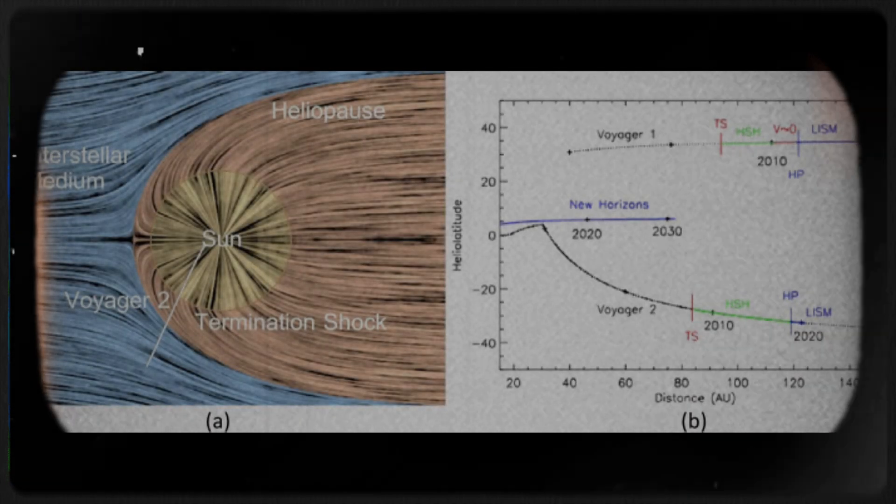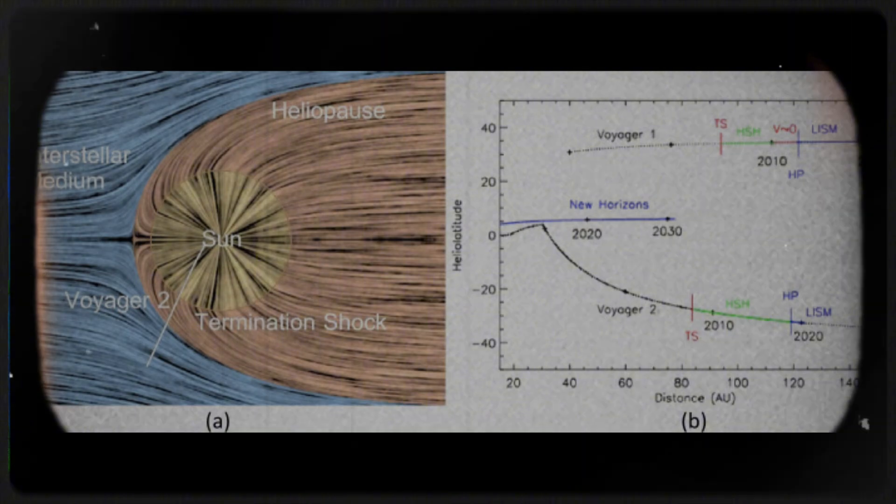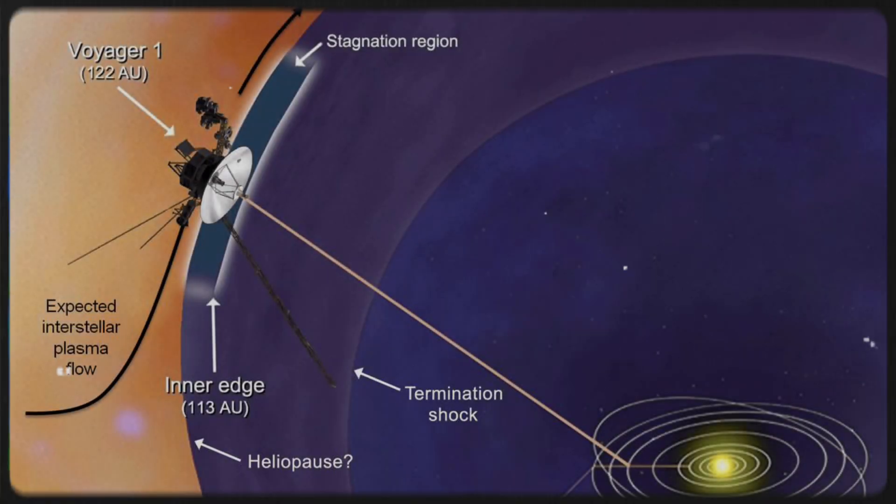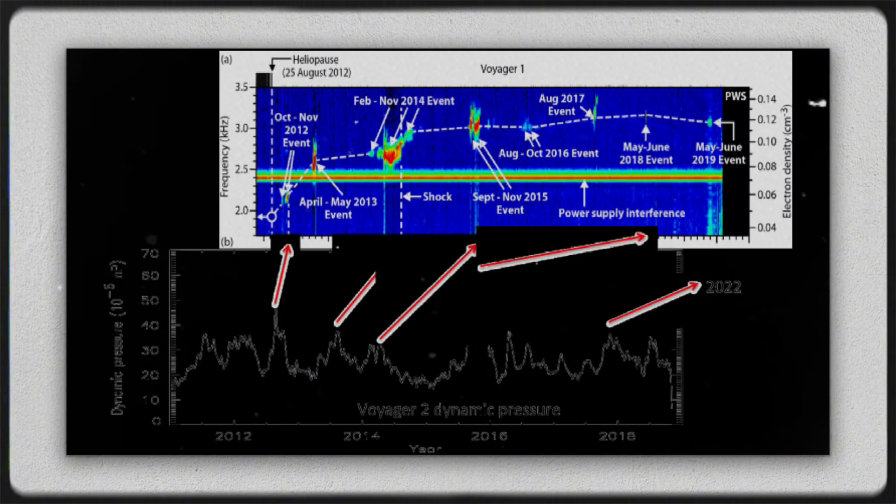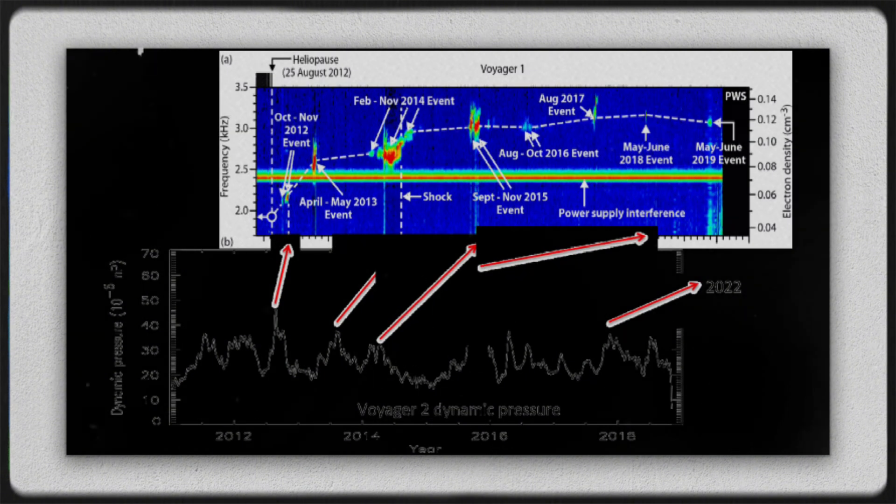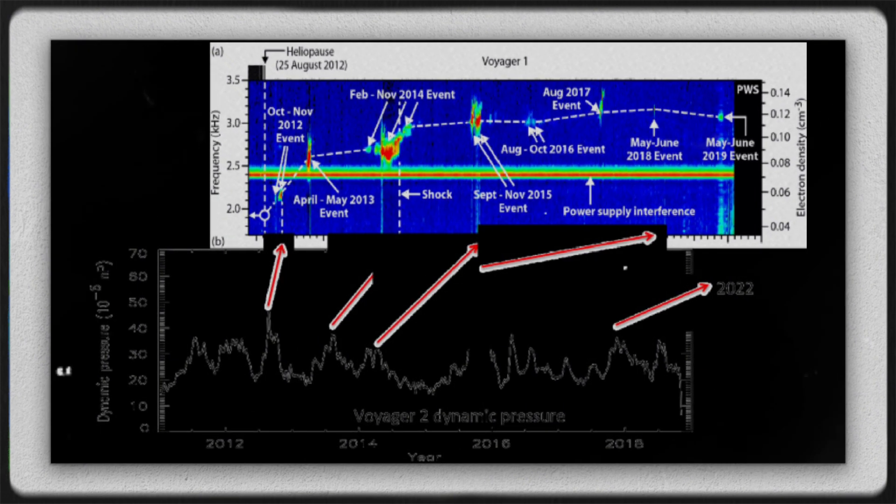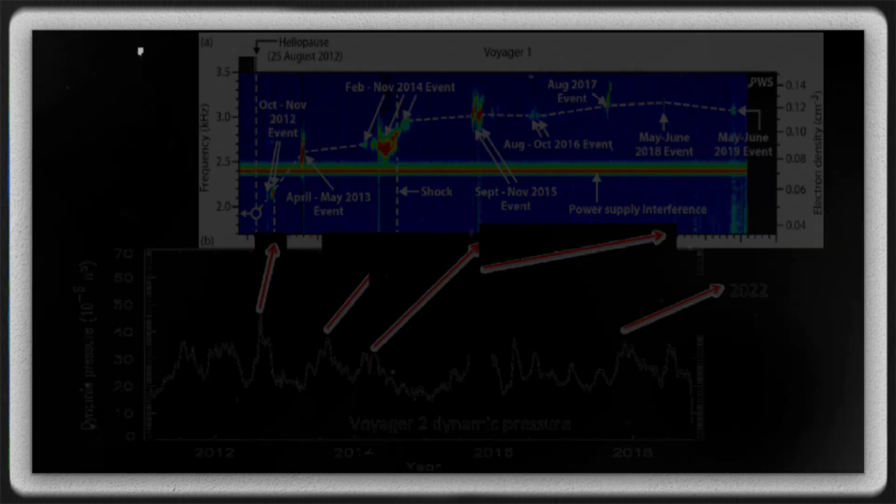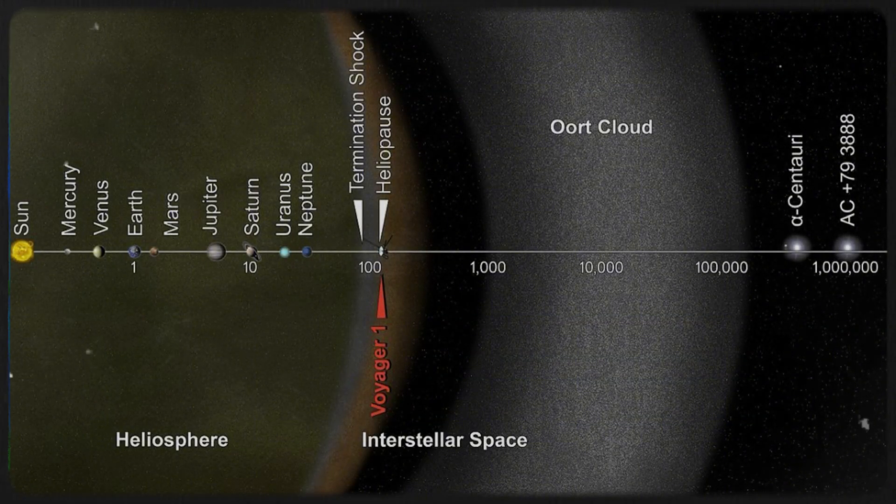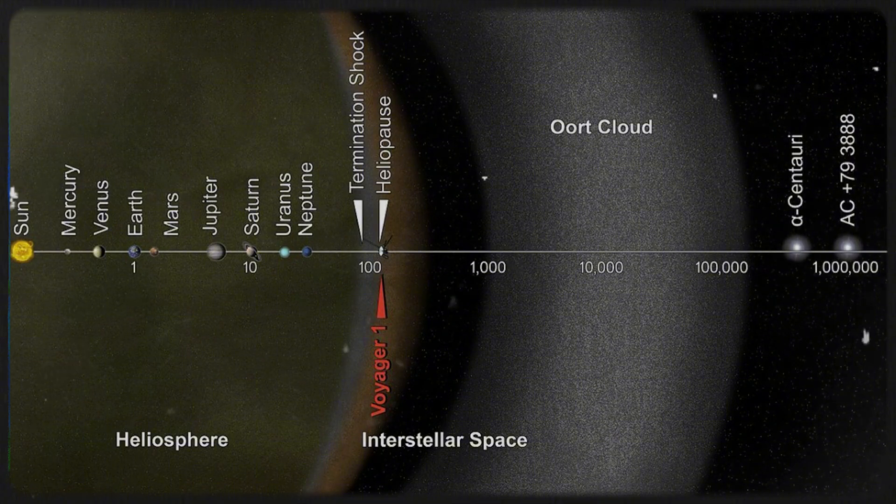As Gurnett noted, many early estimates were essentially guesses. One early estimate placed the heliopause as close as Jupiter, while Gurnett's 1993 calculations suggested it was about 25 times farther, between 116 and 177 astronomical units, with 1 AU being the distance from Earth to the Sun or 93 million miles.